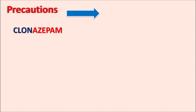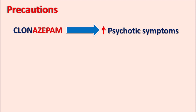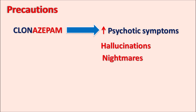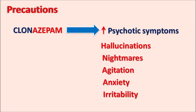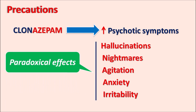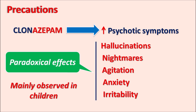A second important precaution is that Clonazepam can increase psychotic symptoms. This drug may precipitate hallucinations, nightmares, agitation, anxiety, and irritability — particularly, anxiety and agitation resemble the anxiety disorder itself. These are called paradoxical side effects, meaning the drug produces the same side effects as the disorder for which it is prescribed. So while Clonazepam reduces anxiety, it can paradoxically also increase anxiety, agitation, and irritability along with some psychotic symptoms. These paradoxical effects are observed mainly in children and should be carefully monitored.